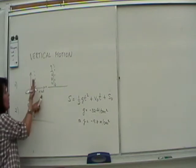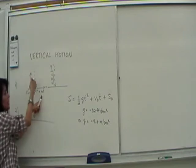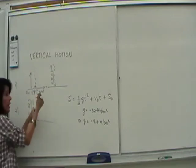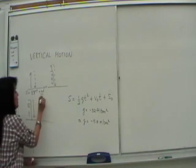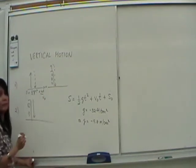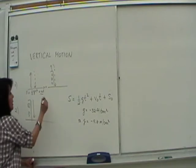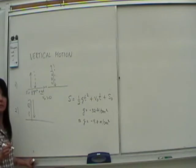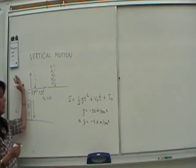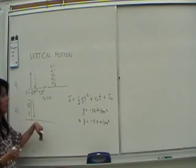Now, if you're throwing it up first before it goes down, this is what we need to point out. What is the V sub 0 here? What sign will V sub 0 have if you're throwing it up first before it goes down? V sub 0 has to be positive, right? Because you're going up, then you go down.